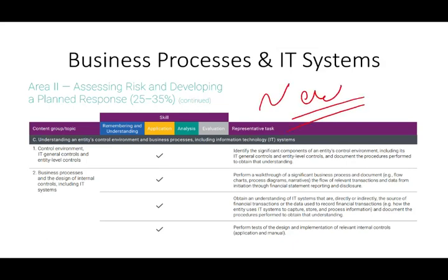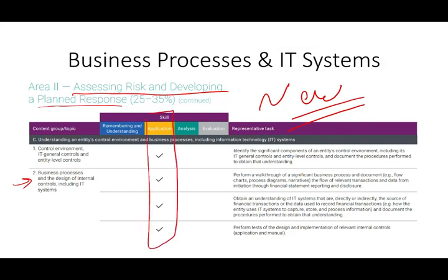The first new topic is business processes and IT systems, specifically under area two — assessing risk and developing a planned response. It's mostly at the application level, not analysis. We're dealing with IT technology systems and IT applications. This includes: performing a walkthrough of significant business processes and documenting the flow of relevant transactions and data from initiation through financial statement and reporting disclosure — now from an IT perspective. You'll also need to obtain an understanding of the IT systems that are directly or indirectly the source of financial transactions, and perform tests of the design and implementation of relevant internal controls — both IT application controls and manual controls.